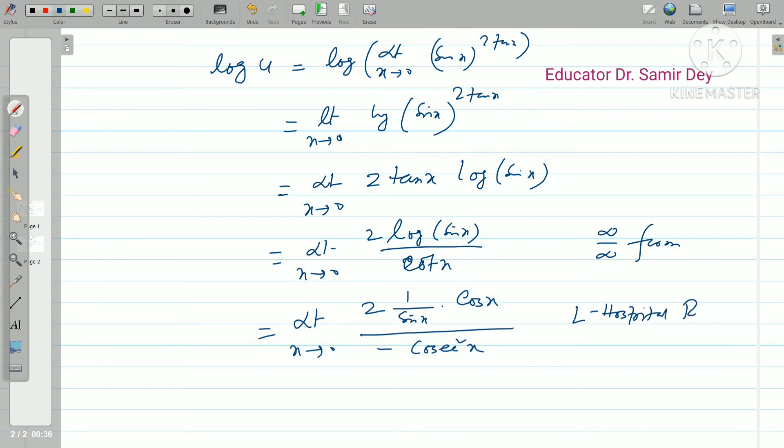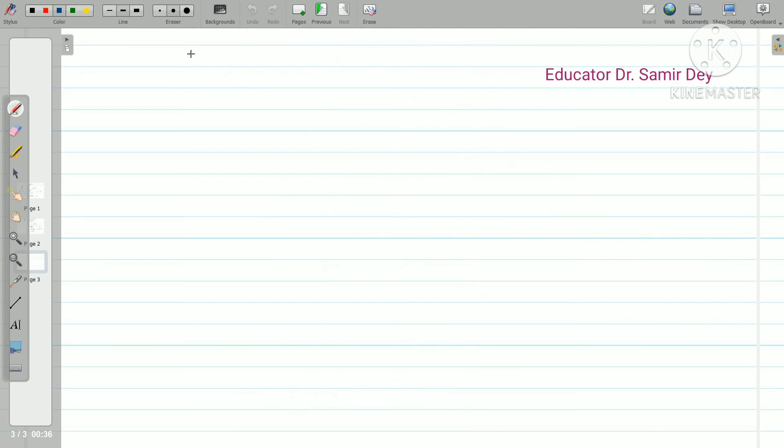X tends to 0, that is 1 by sin x into derivative of sin x, which is cos x, whole divided by cot derivative, which is minus cosec square x. By L'Hôpital's rule, you should mention it. Then you may write x tends to 0, after simplification what you have: sin x cancels, that is you have minus sin x cos x.